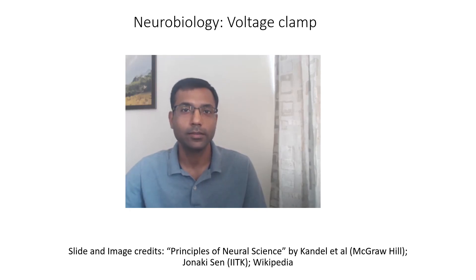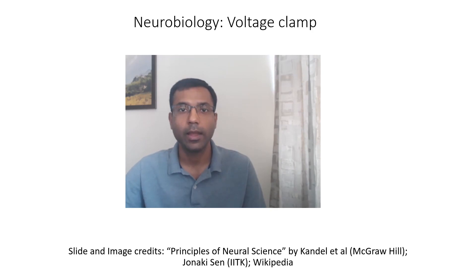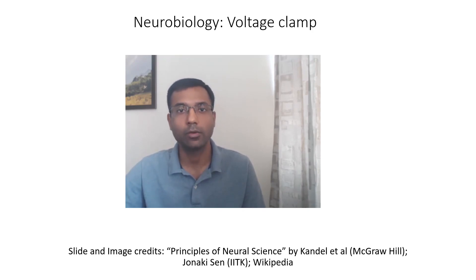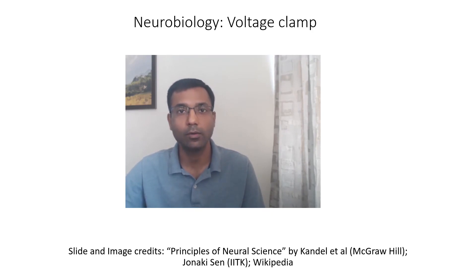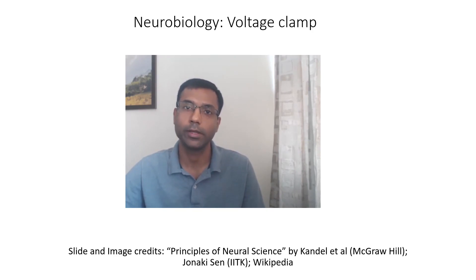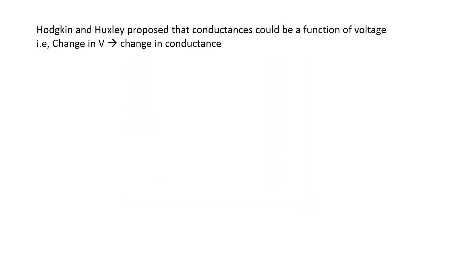Hi everyone, welcome back to neurobiology. In this series of videos we have been trying to understand how action potentials are generated. We have discussed that passive conductances cannot explain action potentials; we also need to look at active conductances and in particular voltage-gated ion channels. We have looked at the technique of patch recording in the last video, which allows us to measure the current through ion channels. Initial experiments by Hodgkin, Huxley, and Katz showed that the conductances important for action potentials could be a function of voltage.